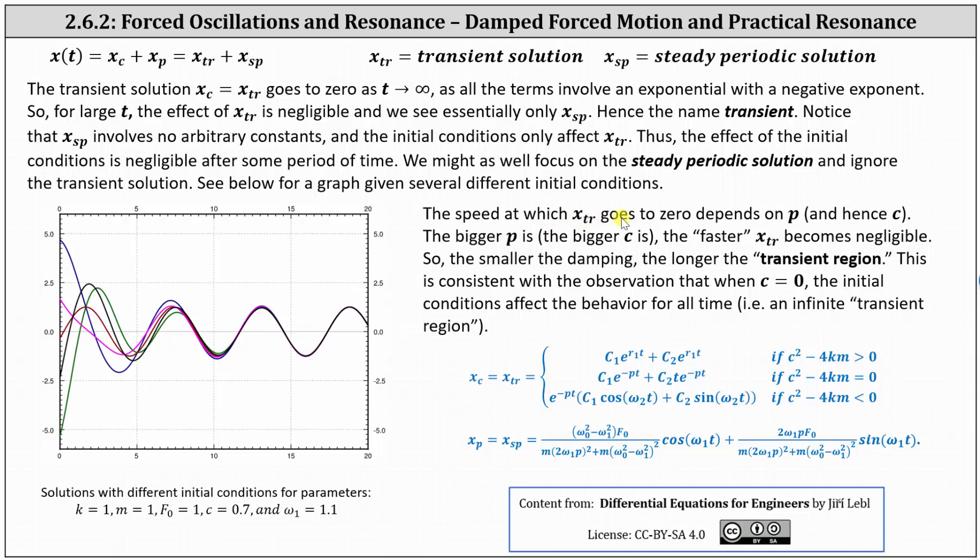The speed at which the transient solution goes to zero depends on p and hence c, the damping or friction constant. The bigger p is, the bigger c is, and the faster the transient solution becomes negligible. So the smaller the damping, the longer the transient region. This is consistent with the observation that when c equals zero, meaning no damping, the initial conditions affect the behavior for all time.